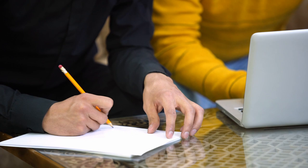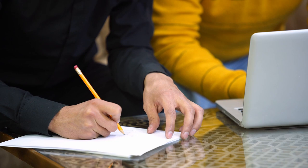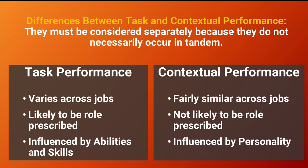The main differences between task and contextual performance mean they must be considered separately, as they do not necessarily occur in tandem. Task performance generally varies across jobs, is likely role-prescribed, and is influenced by abilities and skills. Contextual performance, on the other hand, is fairly similar across different jobs, is not likely to be role-prescribed, and is influenced by personality.